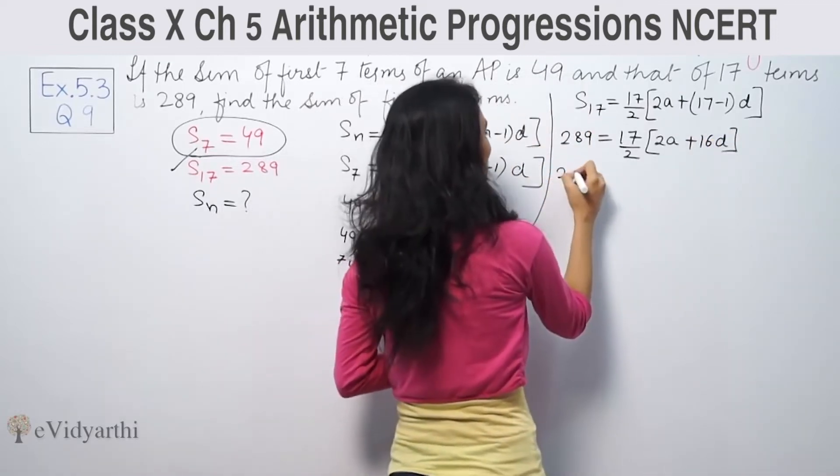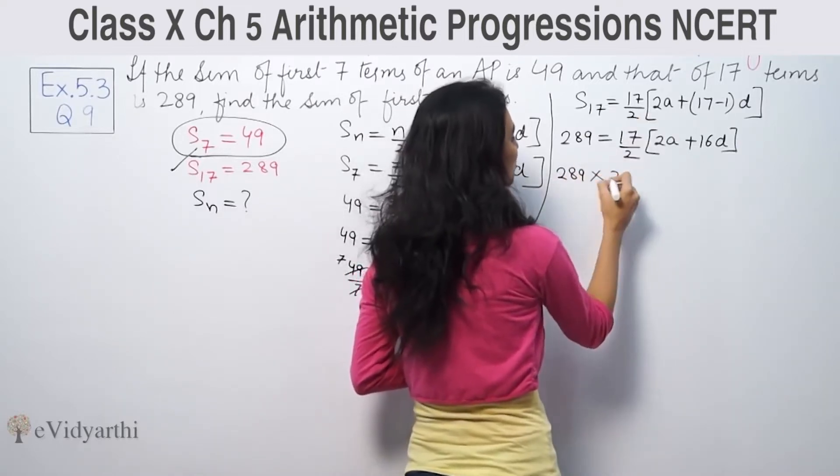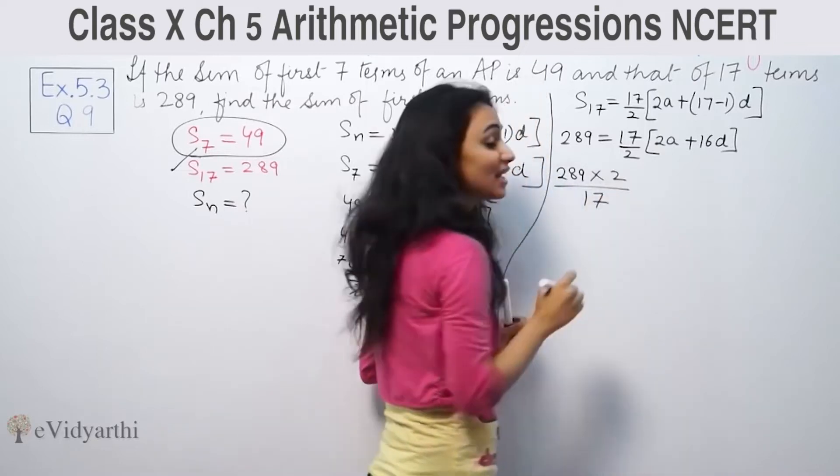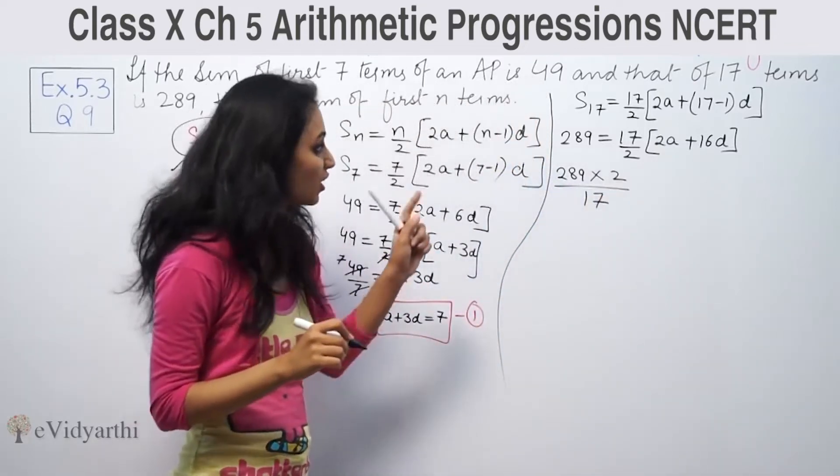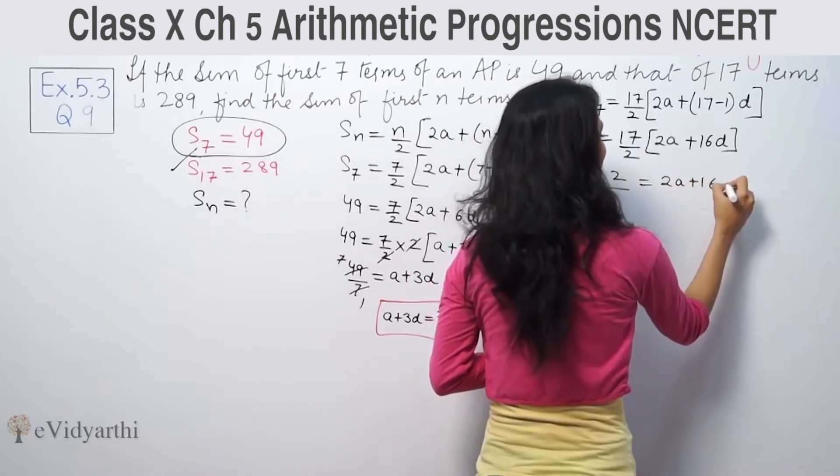Then 289 equals 17 by 2 into [2a + 16d]. We can write 289 times 2 by 17 equals 2a plus 16d.